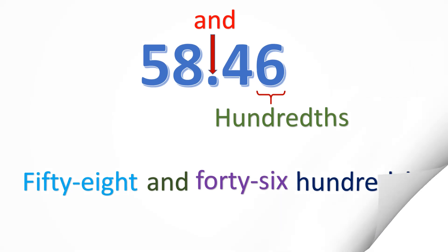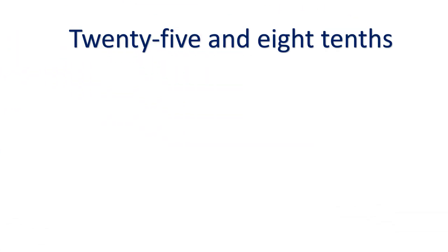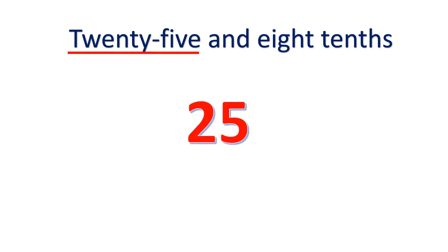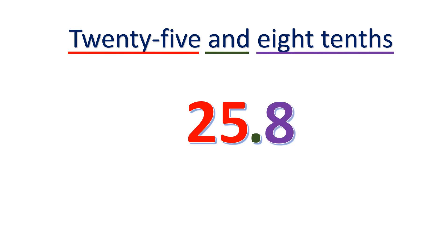Now let me teach you how to write decimals — given words, we translate them into numbers. We start with the whole number, which is 25. Then the word 'and' means the decimal point. Then 8 tenths — we have 8 in the tenths place. So that is 25.8.